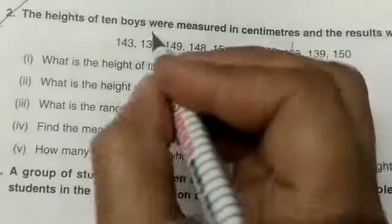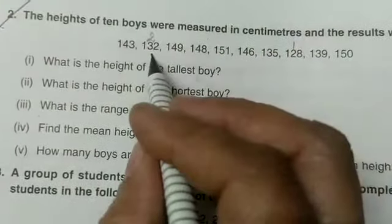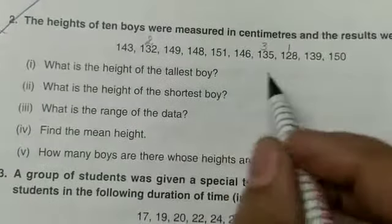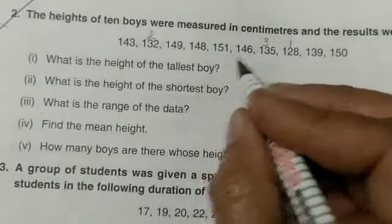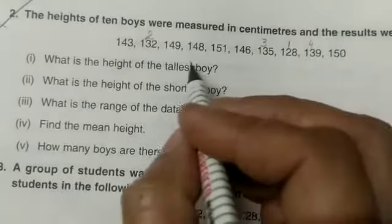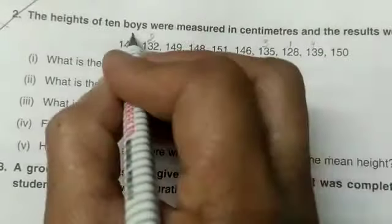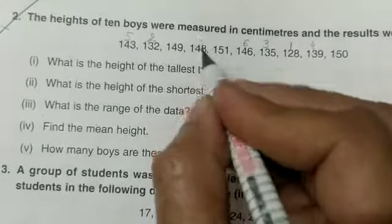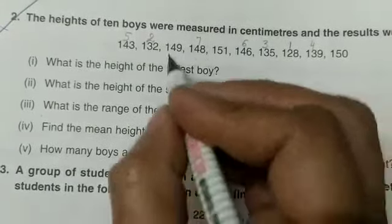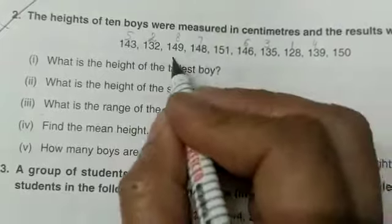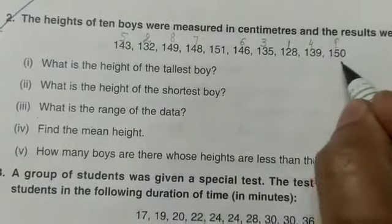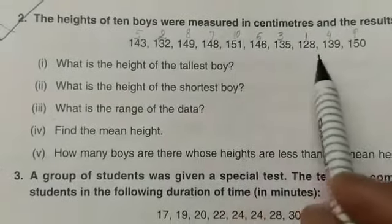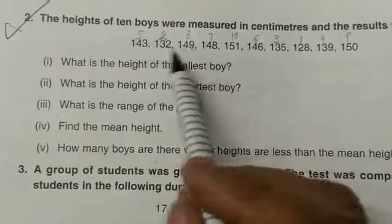So the first number is 128, next is 132, after that 135, then 139, fifth is 143, sixth is 146, seventh is 148, eighth is 149, ninth is 150, and tenth is 151. First of all, arrange in ascending order - write down the first number, then second, then third, and so on.